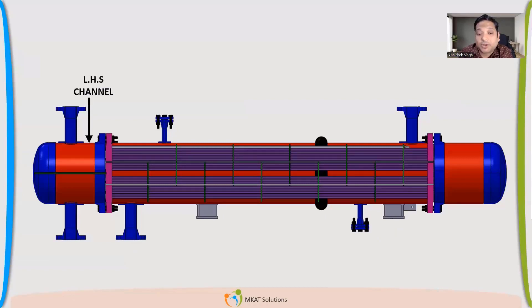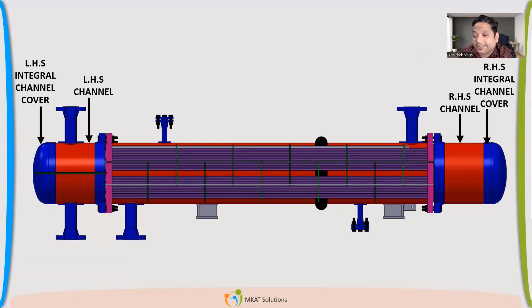This is a channel. We call it left hand side channel because there are two channels. There is right hand side also. For that, we'll call it right hand side channel. This is your bonnet or cover, so left hand side channel cover. It's integral means it's welded, so it's descent. It will be typically welded with the channel. So left hand side integral channel cover. That is the complete nip. The other side, right hand side.